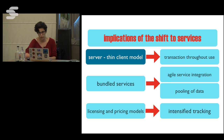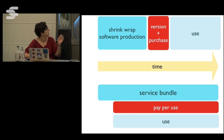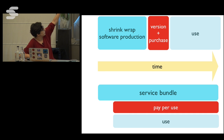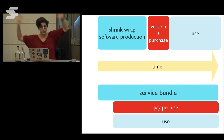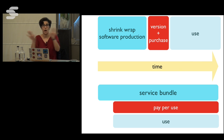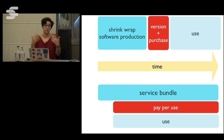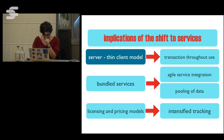The key implication of the shift to services is that the transaction with the company is no longer at the moment you buy the software but throughout use. With shrink wrap, production and use are two separate time intervals. With services, development and use overlap — use becomes part of development.